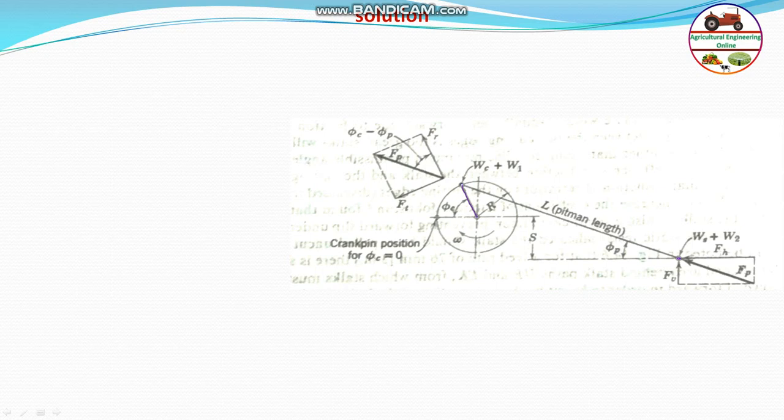Let us go to the cutter mower bar. It has a crank radius — you can see it is given as 50 mm. This is the pitman length L. There is some weight at the cutter bar, that is W_s plus W_2, and at the crank pin that is W_c plus W_1, which is the unbalanced mass. Two angles are given: the pitman angle of 25 degrees and 35 degrees is the crank angle.